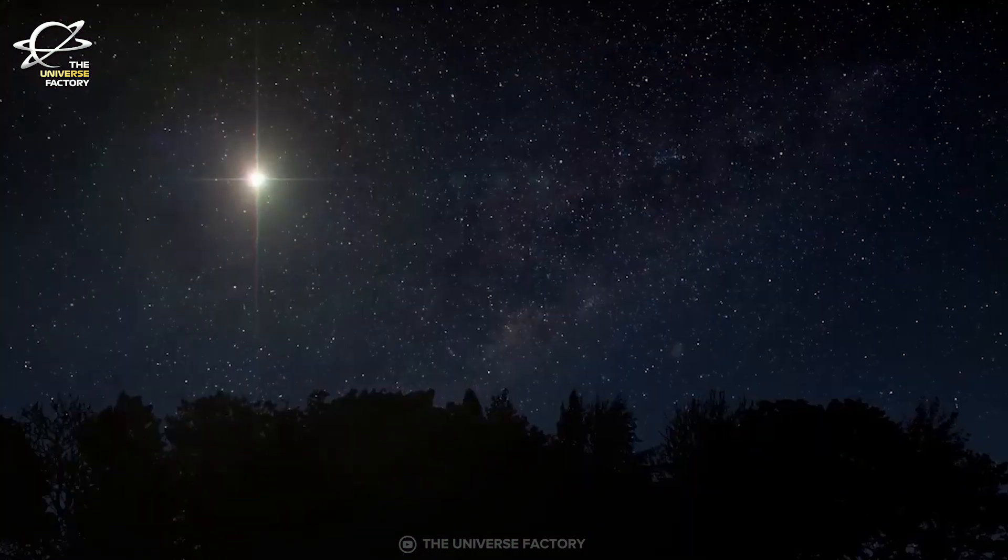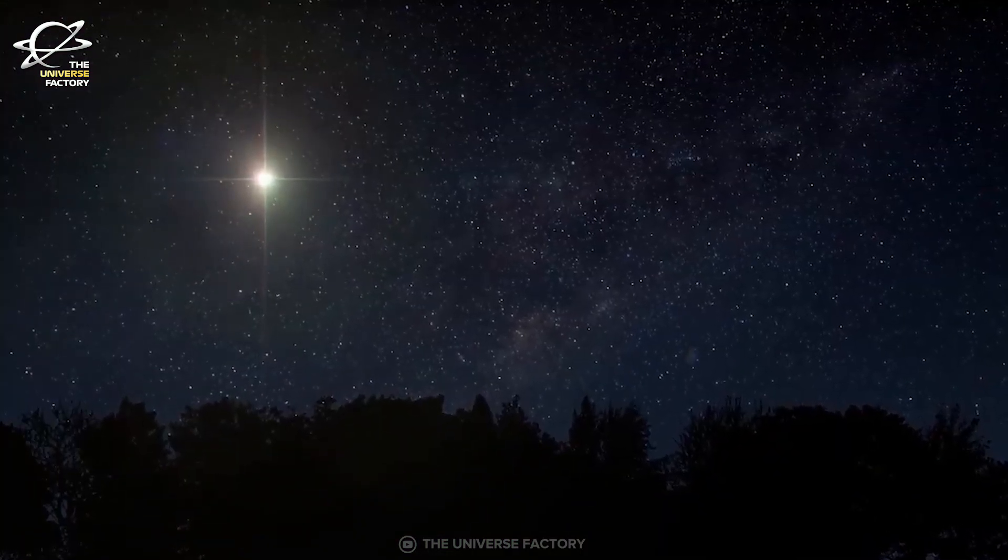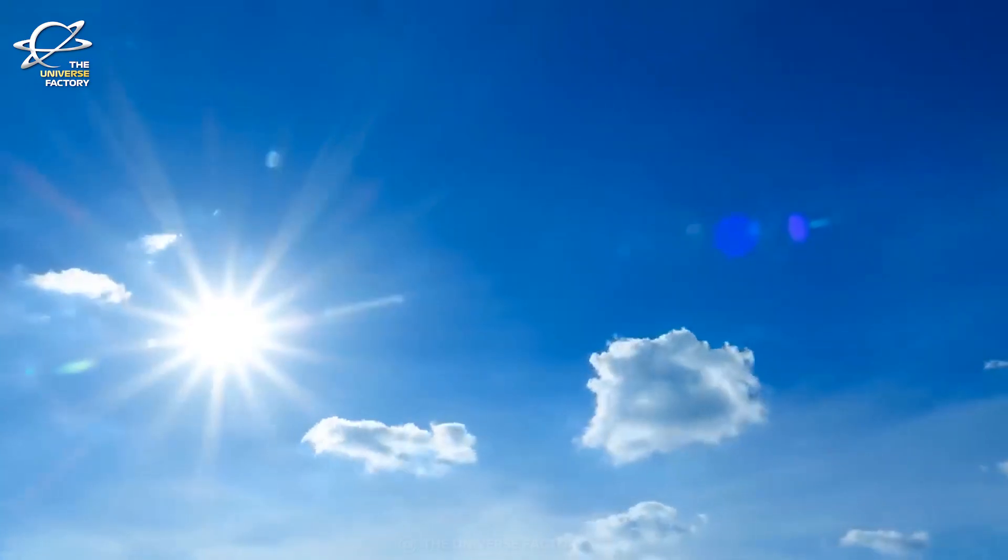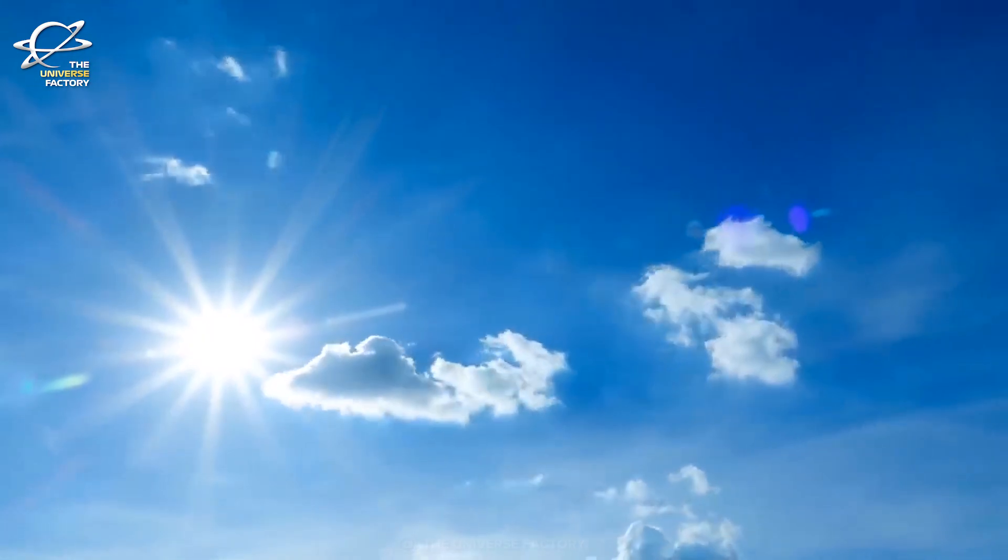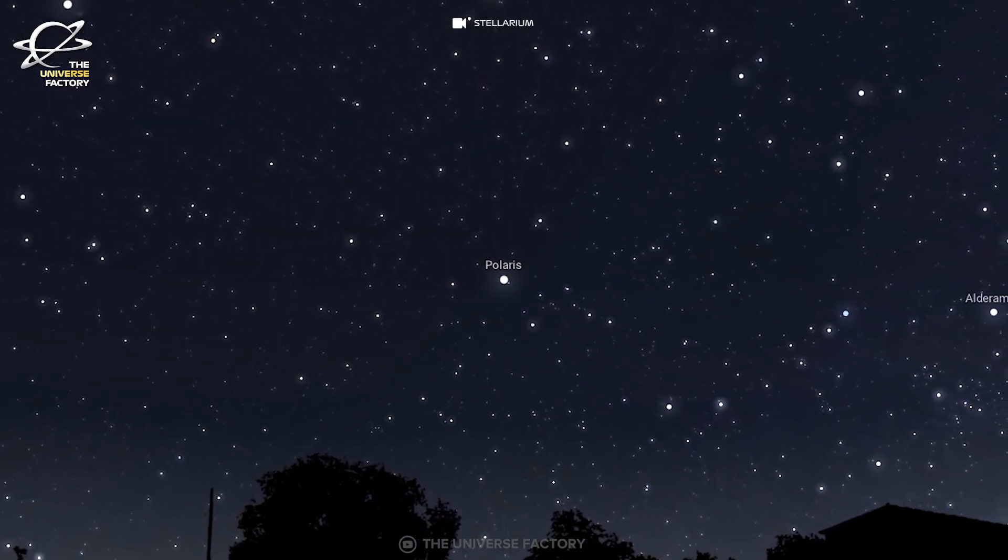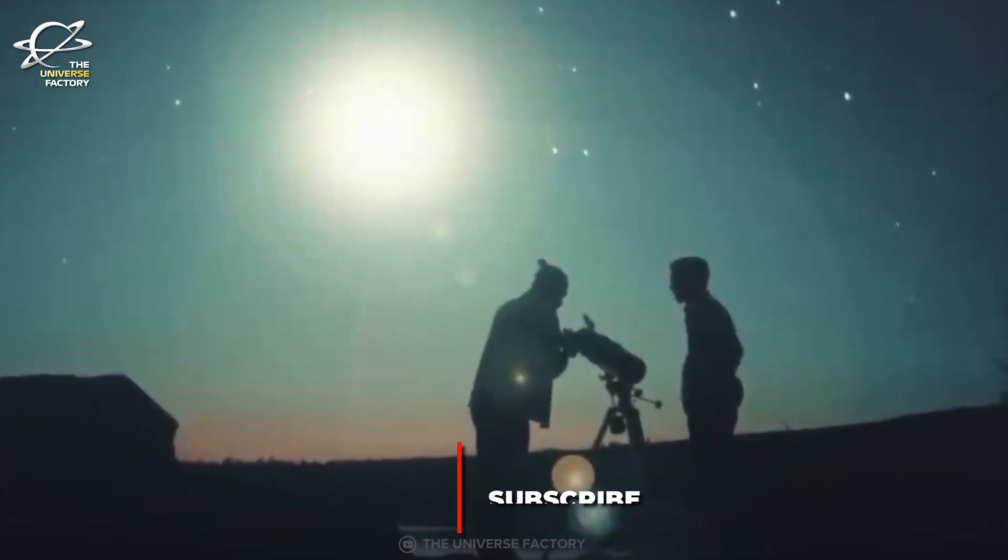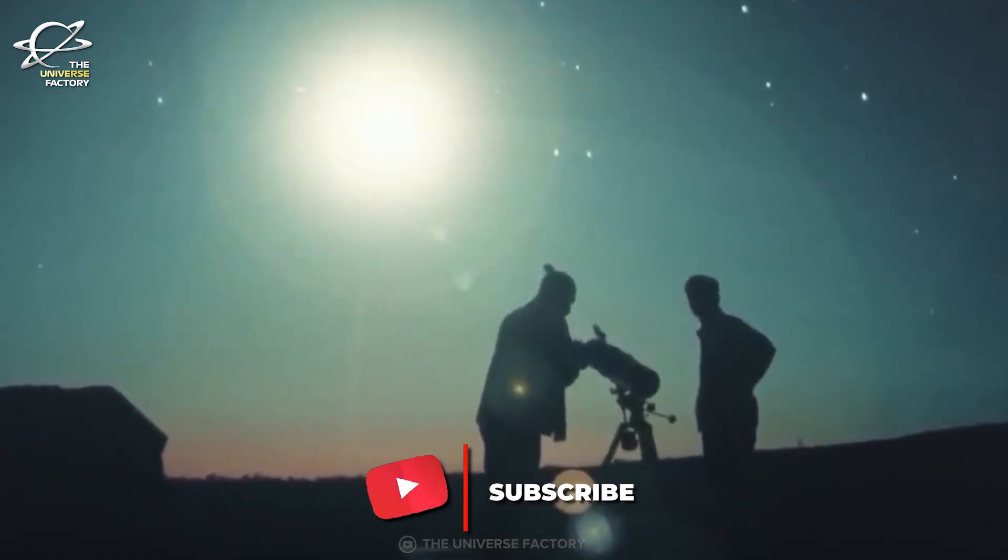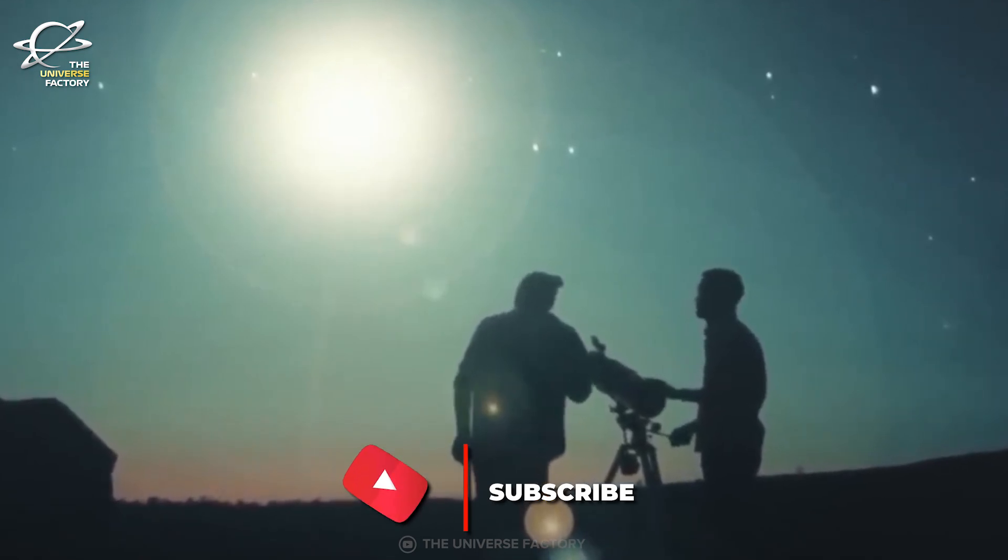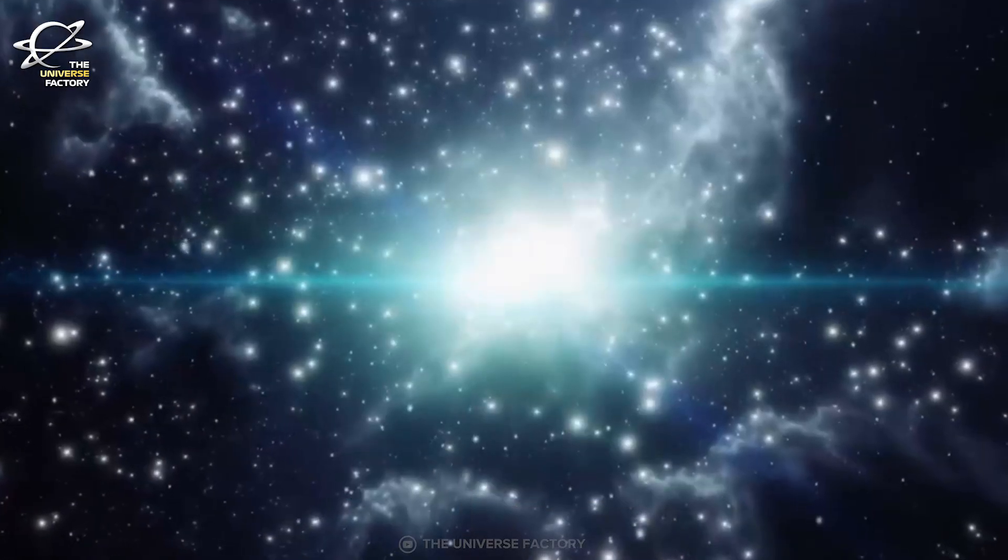The star system, normally magnitude plus 10, is far too dim to see with the unaided eye. But it will jump to magnitude plus 2 during the event. This will be of similar brightness to the North Star, Polaris. Once its brightness peaks, it should be visible to the unaided eye for several days and just over a week with binoculars before it dims again, possibly for another 80 years.